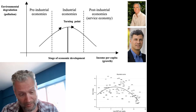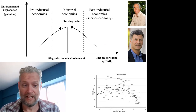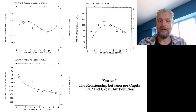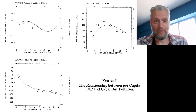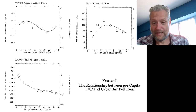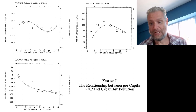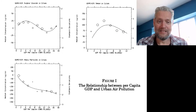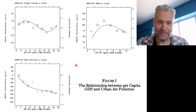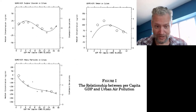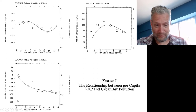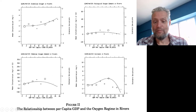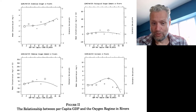This was popularized by Gene Grossman and the late great Alan Krueger. They published two empirical papers where they looked at the relationship between per capita GDP and urban air pollution. You see, particularly if you are focusing on smoke in cities, you see indeed a sort of Kuznets-type shape there. It is a bit less clear for sulphur dioxide, whereas for heavy particles they seem to be just on a downward trajectory.